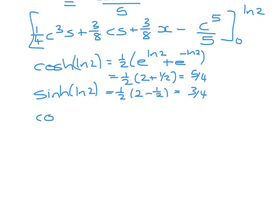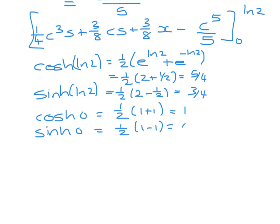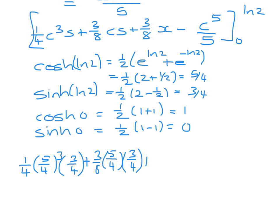For the lower limit, cosh of 0 is one half of 1 plus 1, which is 1, and sinh of 0 is one half of 1 minus 1, which is 0. Substituting in, we have one quarter times 5 quarters cubed times 3 quarters, plus three eighths ln 2, minus one fifth times 5 quarters to the power 5. The first two terms at the lower limit disappear because they have sinh of 0, leaving us with plus one fifth.